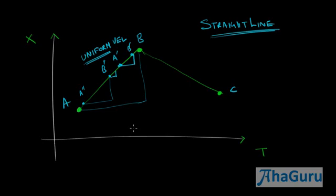So suppose I had a graph which was like this. Then you can say from here to there, this was uniform.